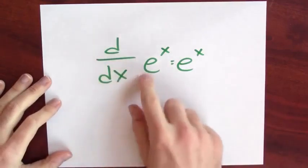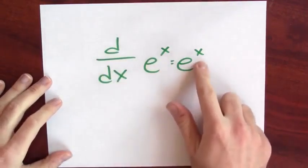In our quest for a function which was its own derivative, we met e to the x. Remember, the derivative of e to the x is e to the x. What's the inverse function for e to the x? What function undoes that sort of exponentiation?